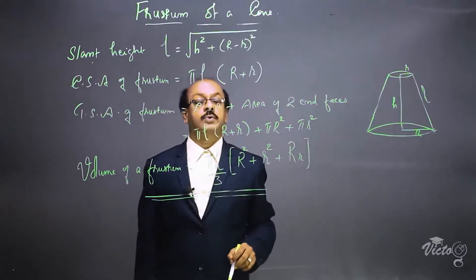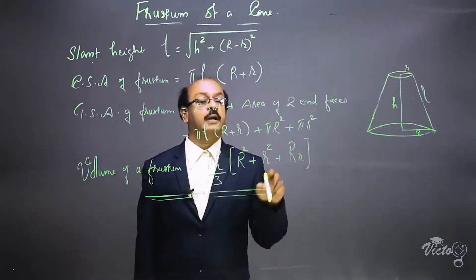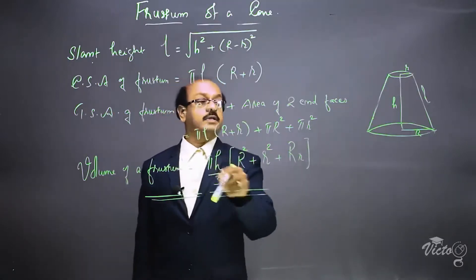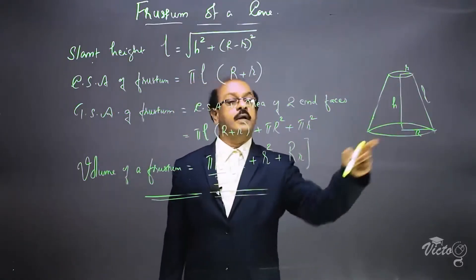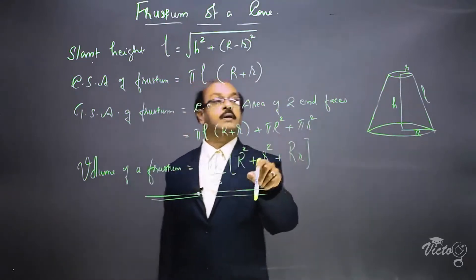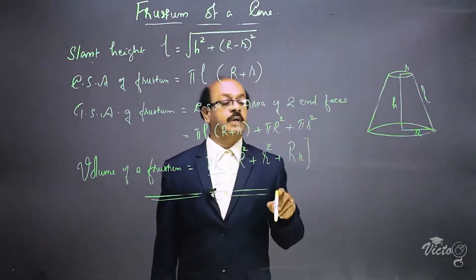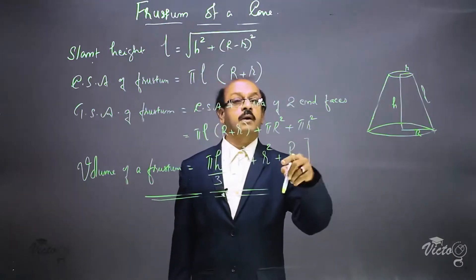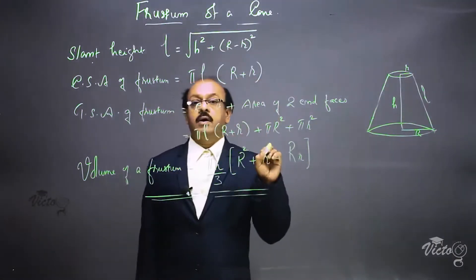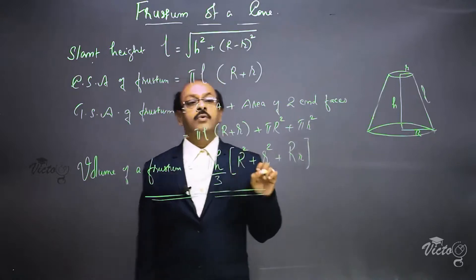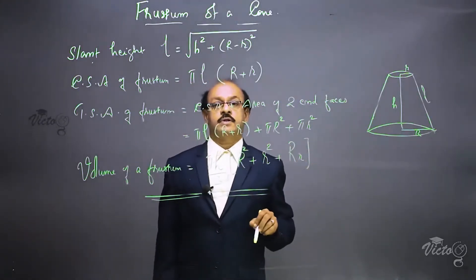The volume of a frustum equals (π·h/3) × (R² + r² + R·r), where h is the height, capital R is the radius of the larger face, and small r is the radius of the smaller face. Study all these formulas thoroughly and you can solve any problems based on the frustum.